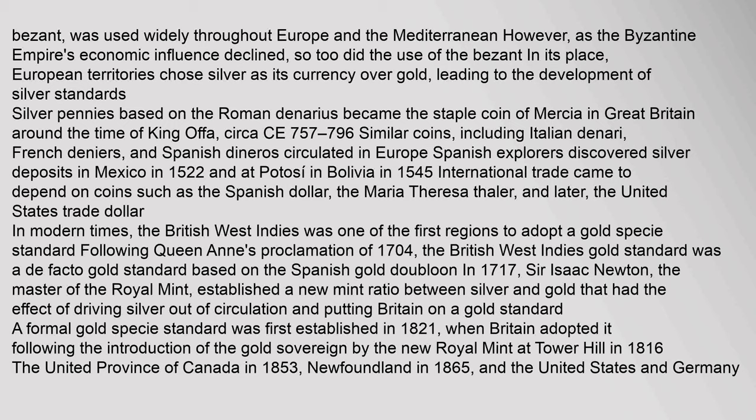European territories chose silver over gold, leading to the development of silver standards. Silver pennies based on the Roman denarius became the staple coin of Mercia in Great Britain around the time of King Offa, circa CE 757–796. Similar coins, including Italian denarii, French deniers, and Spanish denarii, circulated in Europe. Spanish explorers discovered silver deposits in Mexico in 1522 and at Potosi in Bolivia in 1545. International trade came to depend on coins such as the Spanish dollar, the Maria Teresa Taller, and later the United States trade dollar.